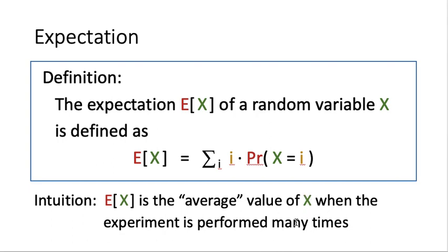When the experiment is performed many, many times — let's say 1 million times — there are some cases where the value of x will be equal to i. Say 300 cases where it equals 15. If we talk about the average value of x, then 15 is multiplied by the number of times it appears (300), then divided by 1 million for the average. So 300 divided by 1 million corresponds to the probability that x equals i. By weighting the value of i with its corresponding probability, we get a weighted sum of possible values — the average value of x.